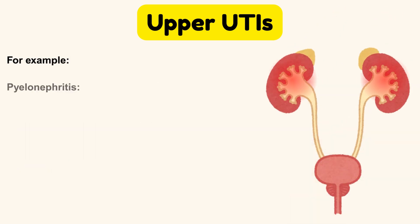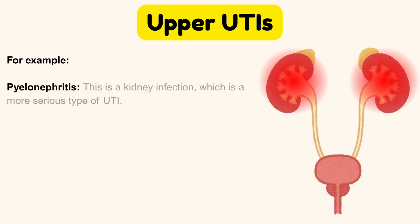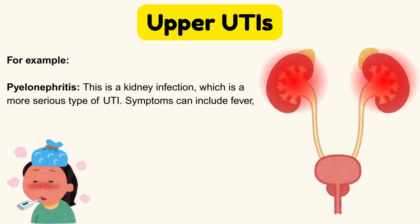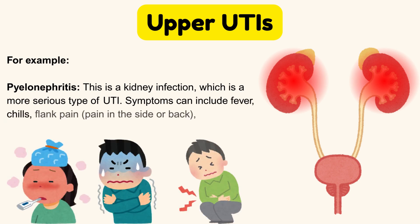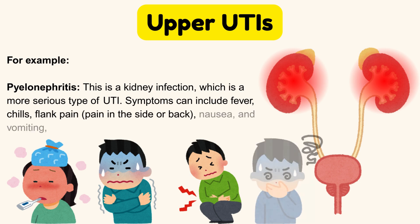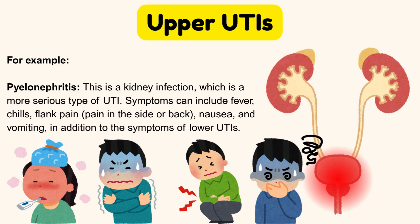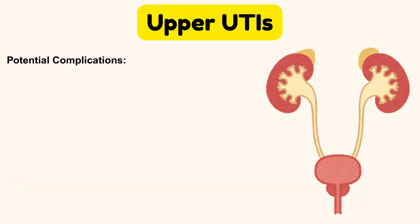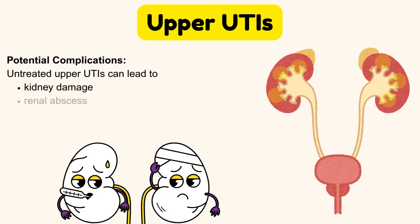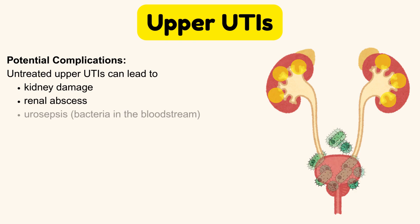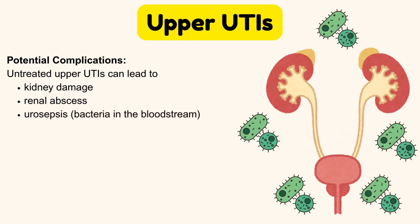For example, pyelonephritis — this is a kidney infection, which is a more serious type of UTI. Symptoms can include fever, chills, flank pain (pain in the side or back), and nausea and vomiting, in addition to the symptoms of lower UTIs. Potential complications: untreated upper UTIs can lead to kidney damage, renal abscess, or urosepsis — bacteria in the bloodstream.